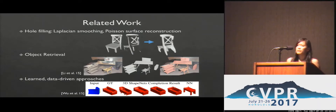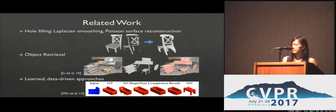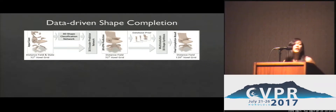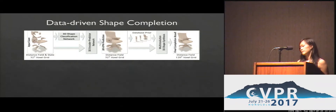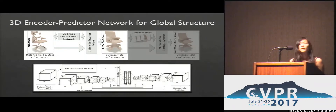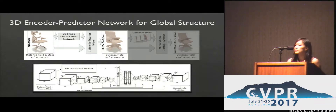Our approach also leverages 3D CNNs, but we focus specifically on the completion task. Our method takes a partial scan as input and produces a complete 3D mesh. First, we predict the high-level structure, and then synthesize local detail. We propose a 3D encoder predictor network to infer the high-level structure. Our network is class agnostic and designed to map partial scans into a shared embedded space, which we correlate with the complete models to fill in missing information.